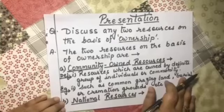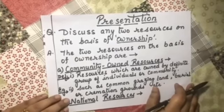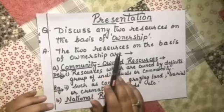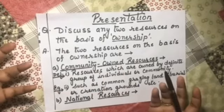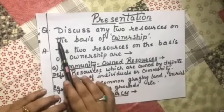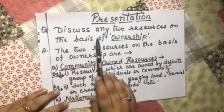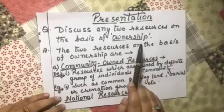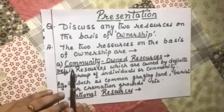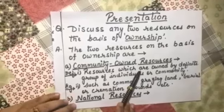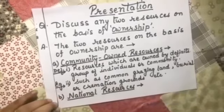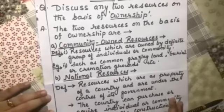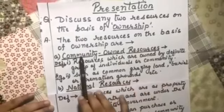Now let us proceed to the next segment — the presentation, that is how you will present answers in your board examinations. The question is: discuss any two resources on the basis of ownership. I have taken community-owned resource and national resource as the two examples. This is the way that you will write it — here is the whole answer.